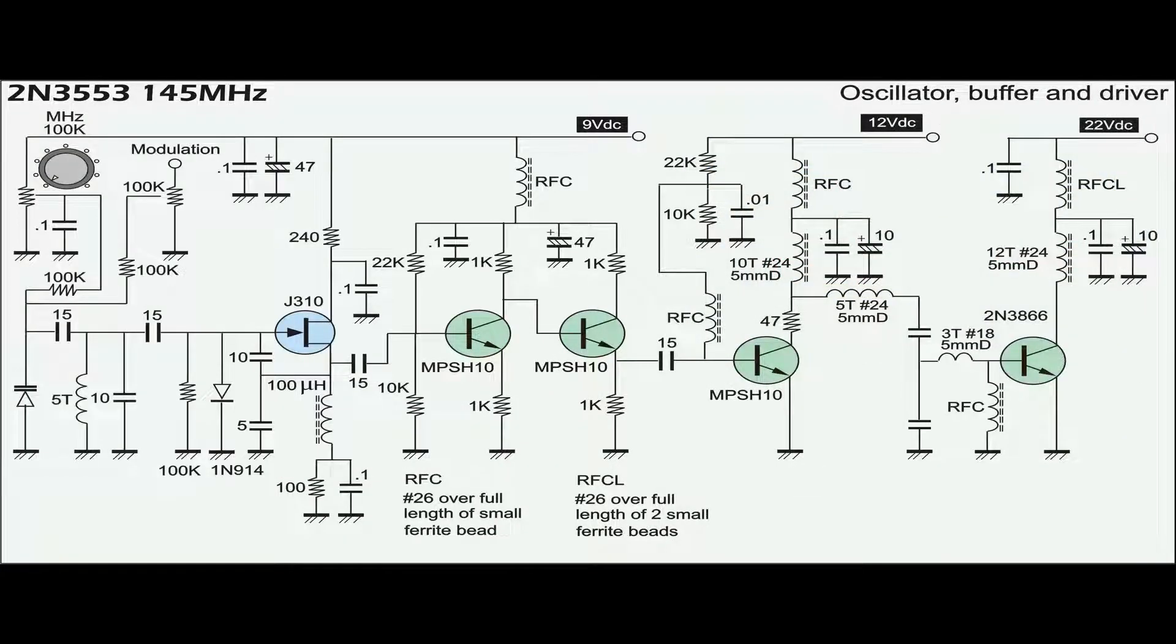Actually three different potentials from a single transformer are used to operate the oscillators, the buffer, the pre-driver and the driver as shown here.